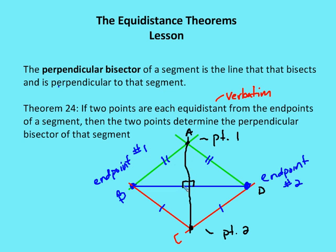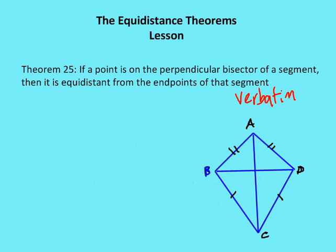So again, it forms right angles with that segment, and it's going to bisect that segment, forming two congruent segments.